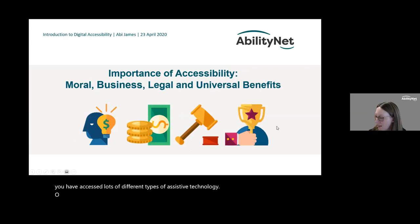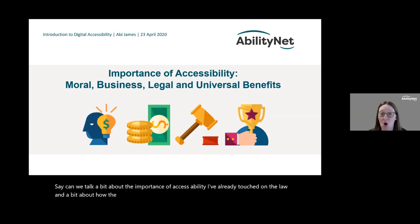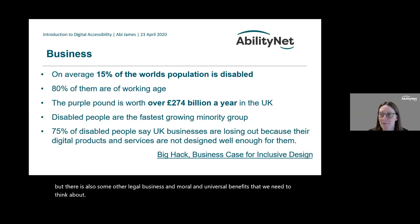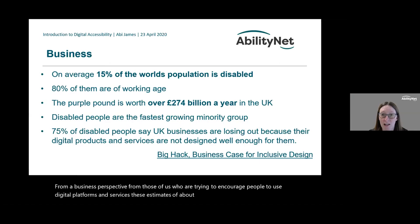I'm going to talk a bit about the importance of accessibility. Beyond the social model and removing barriers, there are legal, business, moral, and universal benefits to consider. From a business perspective, there are estimates that about 15% of the world population is disabled — higher in the UK and many western communities, up to 20%. In the UK, 80% of disabled people are of working age, though you're much more likely to become disabled as you get older.